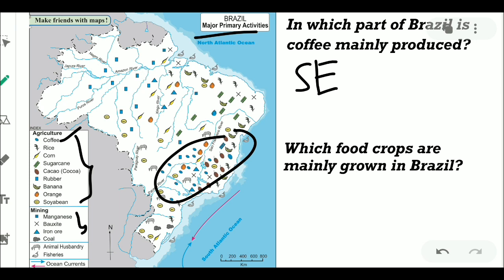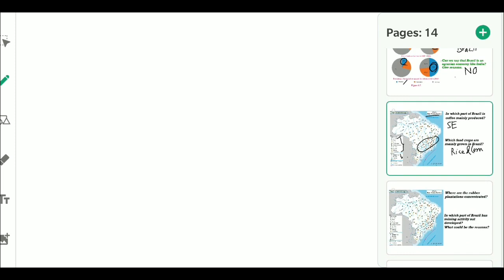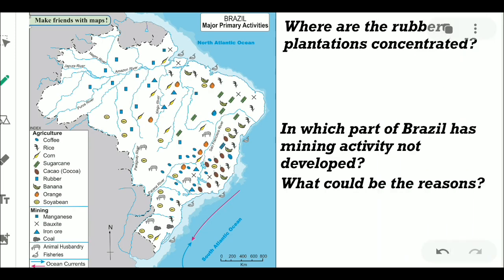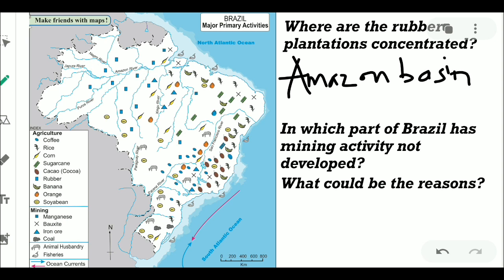Which food crops are mainly grown in Brazil? The main food crops grown in Brazil are rice and corn. Next question: where are the rubber plantations concentrated in Brazil? In Brazil, the rubber plantations are concentrated in the Amazon basin.